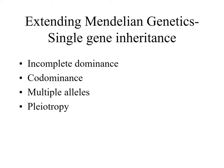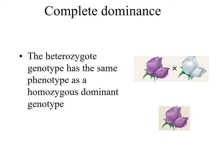So we're going to be looking at incomplete dominance, codominance, multiple alleles, and pleiotropy.